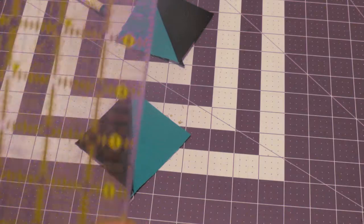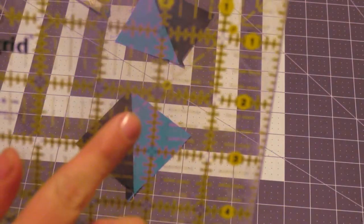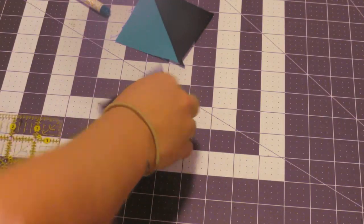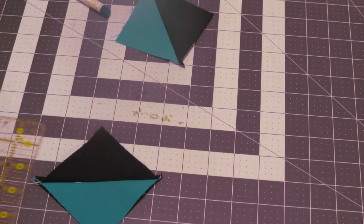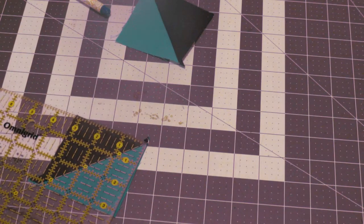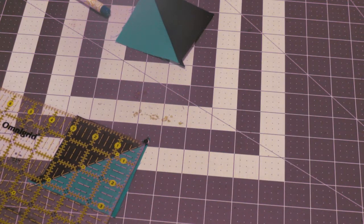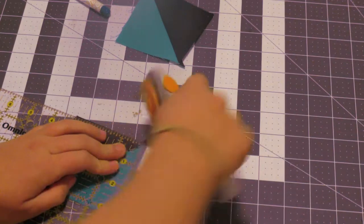To trim these, all we're going to do is take our ruler with our 45 degree mark and line that 45 degree mark up with our seam. What I like to do is trim it on both sides. So I do a little bit bigger than three inches and I'm going to trim it on this side.